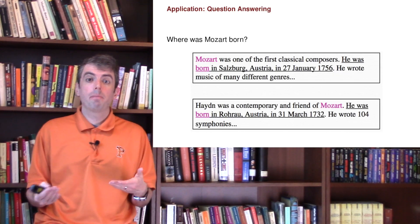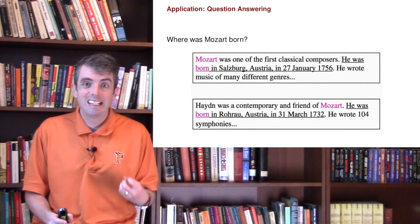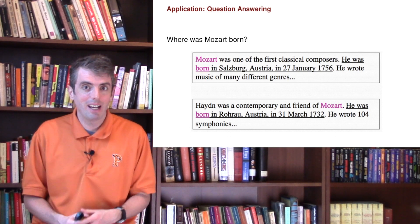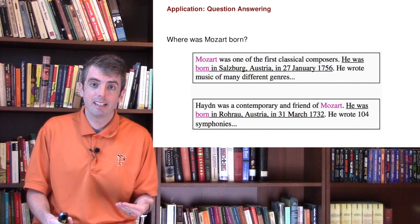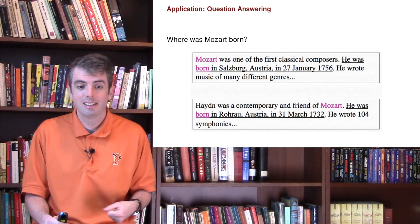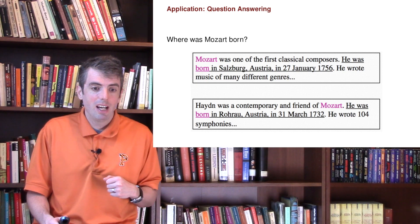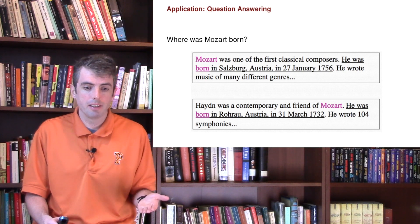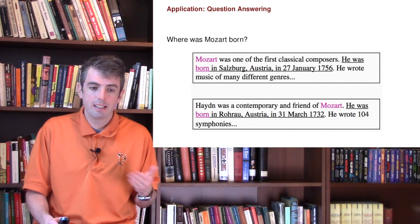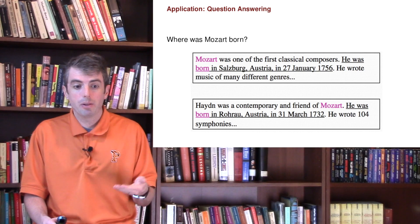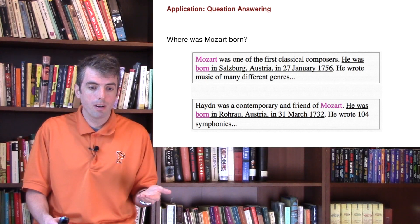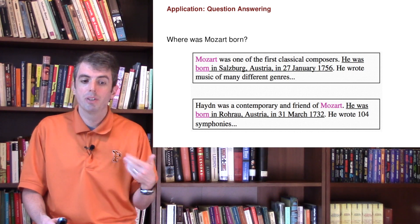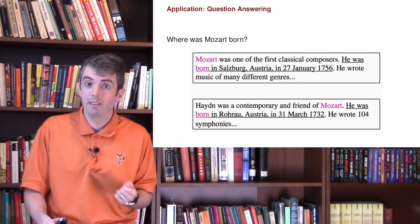Let's say that you did have a perfect co-reference system — the applications seem really obvious. For example, let's say you have a piece of text: 'Mozart was one of the first classical composers. He was born in Salzburg, Austria...' And if you have the question 'Where was Mozart born?', you could figure out that Mozart was born in Salzburg, Austria.